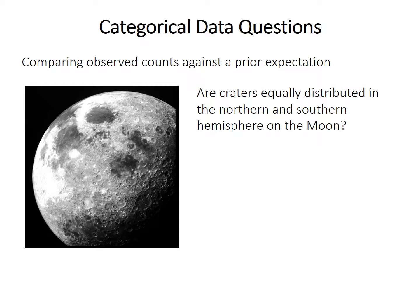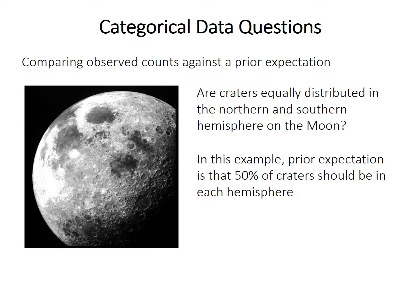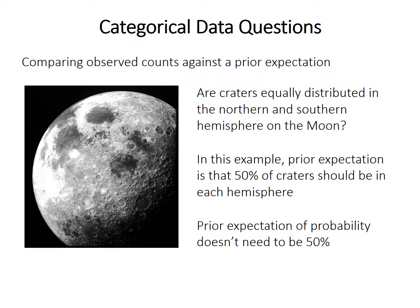For example, in this somewhat contrived question: are craters equally distributed in the northern and southern hemispheres on the moon? Because both hemispheres are the same size, each makes up half the surface area of the moon, so our simplest expectation might be that 50% of the craters should be in each hemisphere. We can then count the craters in each hemisphere and compare that value to our expectation — and keep in mind the expectation doesn't have to be 50%. This type of test is called testing for goodness of fit. You'll typically have one sample and two or more categories. We'll talk about goodness of fit tests in the next video.